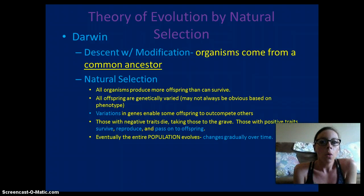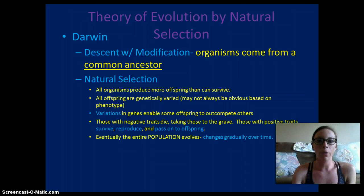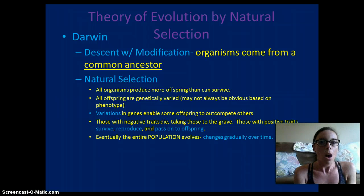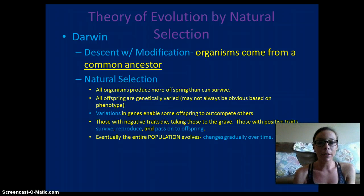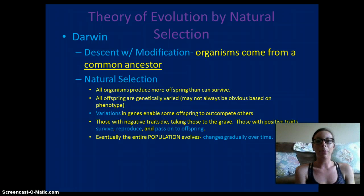All organisms produce more offspring than can survive, so there has to be an overproduction of a population. All offspring are genetically varied, meaning that there is more than one phenotype within the population. Variations in the gene will enable some offspring to outcompete others.